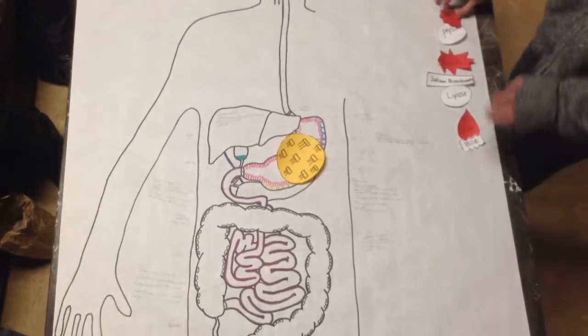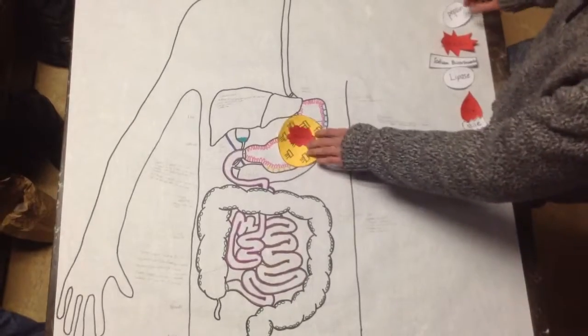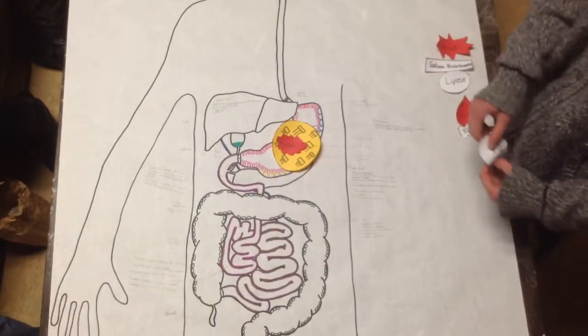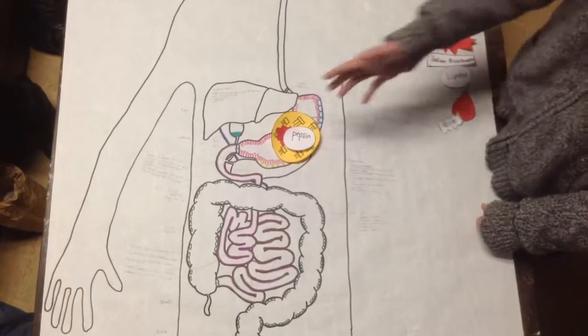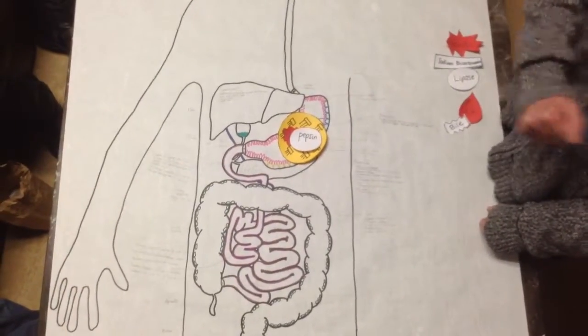Now when in the stomach, gastrin is released and this triggers the release of hydrochloric acid and pepsinogen. These combine to create pepsin, but that's kind of pointless because pepsin doesn't do anything to fats.